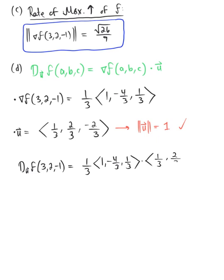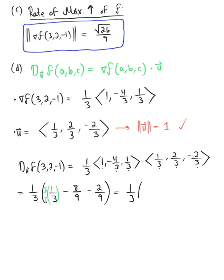The directional derivative at the point (3, 2, -1) is the dot product of our gradient vector with the given unit vector. Keeping the scalar multiple 1 third out front, we compute: 1 times 1/3 equals 1/3, plus (-4/3) times (2/3) equals -8/9, plus (1/3) times (-2/3) equals -2/9. Getting a common denominator for the first term — multiplying by 3/3 — we have 1 third times (3 minus 8 minus 2) over 9, giving a final answer of negative 7 over 27. This is the directional derivative at the given point in the direction of the given unit vector.